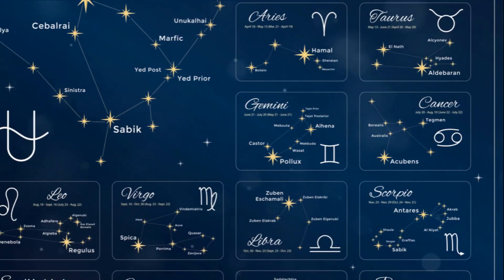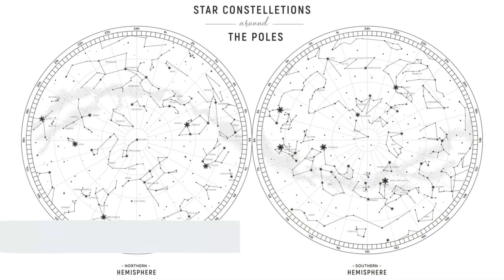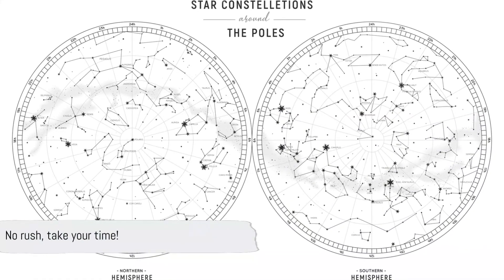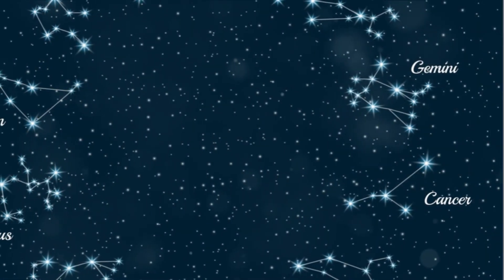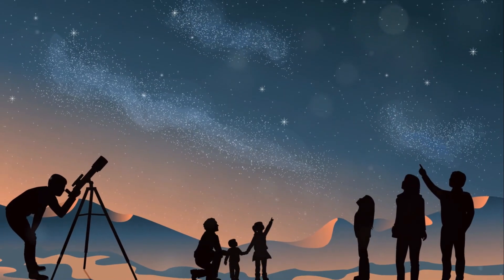And finally question 3. How many constellations are there? Are there A, 50, B, 88, or C, 100? Take your time, there's no rush. And remember it's okay if you don't know all the answers. The important thing is that you're learning and having fun.